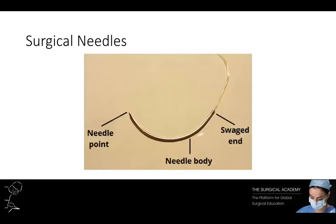The surgical needle allows the placement of the suture within the tissue, carrying the material through with minimal residual trauma. Commonly, surgical needles are made from stainless steel. They are made up of a swage end, which connects the needle to the suture, and a needle body or shaft, which is the region grasped by the needle holder. Needle bodies can be round, cutting, or reverse cutting.